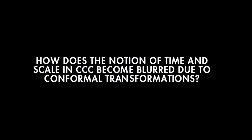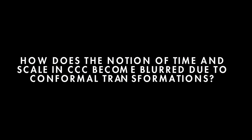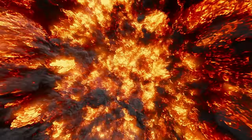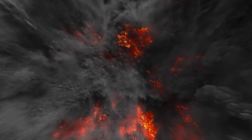How does the notion of time and scale in conformal cyclic cosmology become blurred due to conformal transformations? And why does Penrose propose that the vast future universe becomes indistinguishable from another universe's Big Bang?